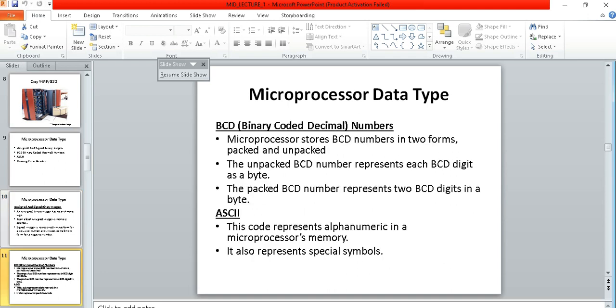And BCD, that is binary coded decimal numbers. Microprocessor stores the BCD numbers in two forms: one is unpacked and one is packed. When it is unpacked it represents each BCD digit.